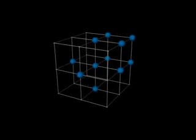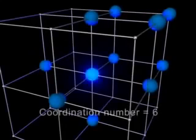A key feature of a crystal structure is its coordination number, the number of the nearest neighbors surrounding each particle.